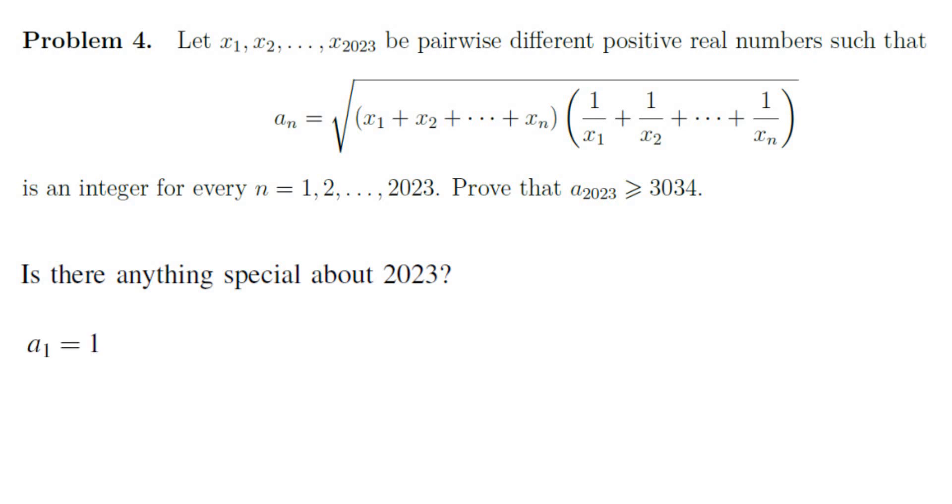So n equals 1 gives us a1 equals 1. For n equals 2 we get a2 squared. If you expand that, x1 plus x2 times 1 over x1 plus 1 over x2 gives you 2 plus x1 over x2 plus x2 over x1.